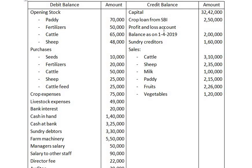Capital and crop loan from SBI have to be recorded on the liability side of the balance sheet. Profit and loss account balance as on 1st April 2019 has to be credited to the profit and loss account. Sundry creditors is a liability. Sales have to be credited to the crop and livestock account.